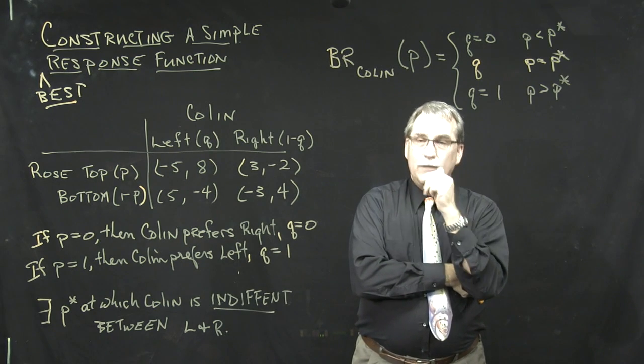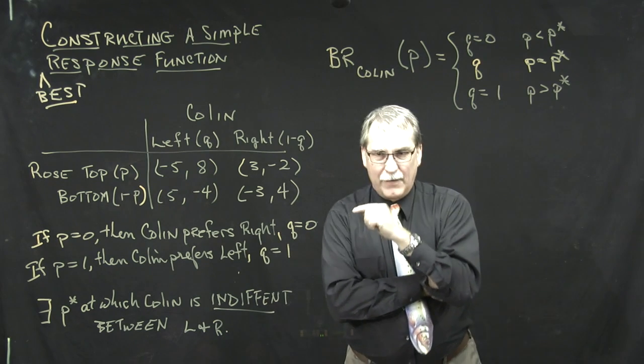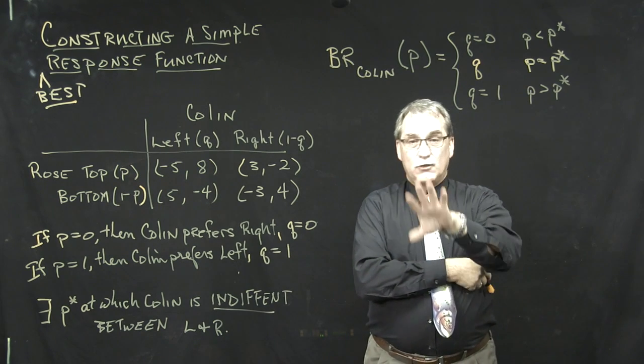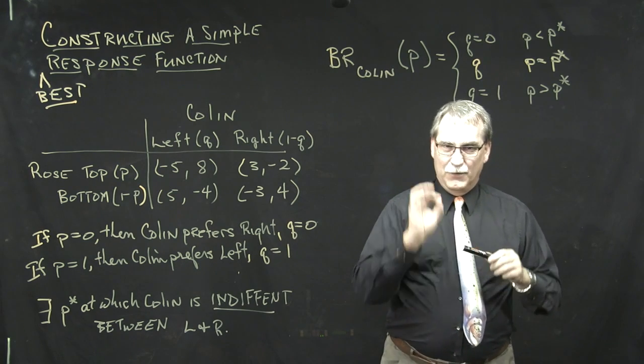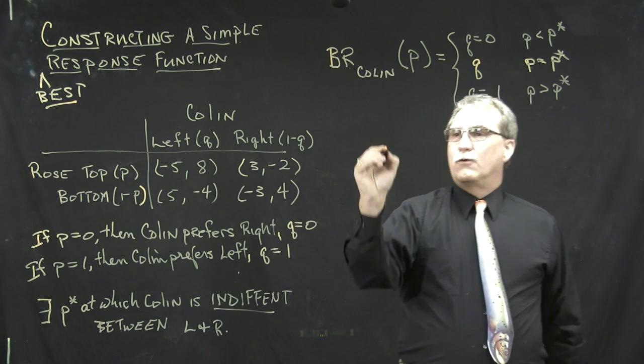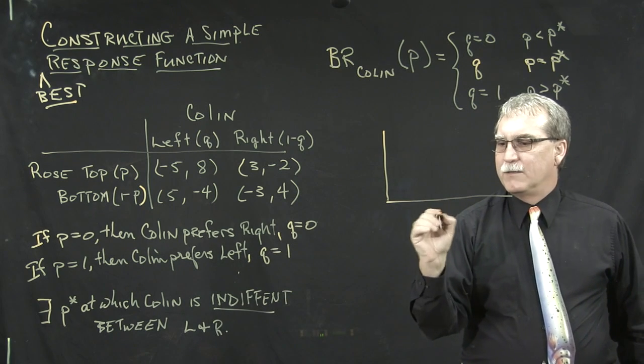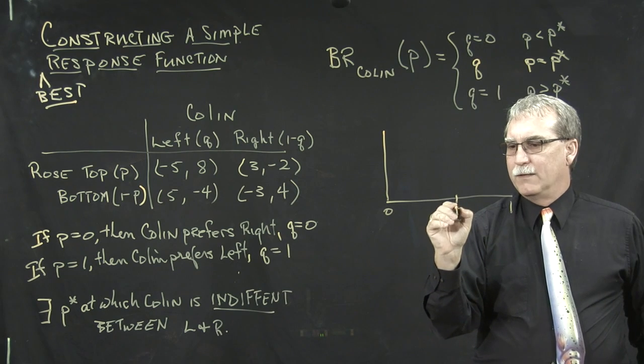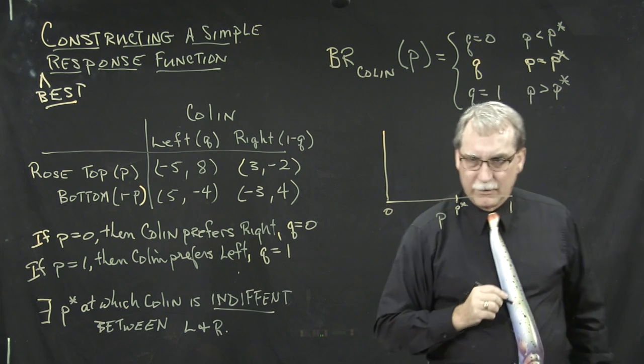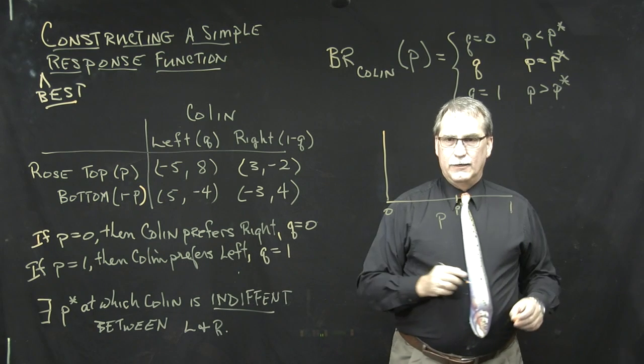Now this might be a little disturbing to some of you because it's not a function like you've seen in elementary math courses. So let's graph this function so we can see what it is that's bothering you very explicitly. So the graph of this function is as follows. The domain is P, and P goes from 0 to 1. And I will note for the moment that there's some place in the middle that we're going to call P star. I don't know where that is, but there's a P star in there someplace.